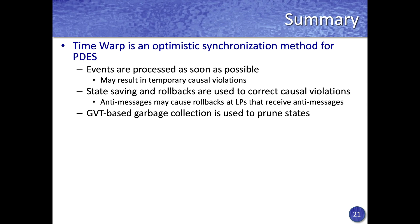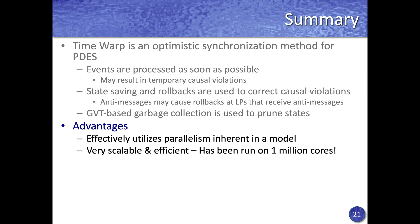In summary, time warp is an optimistic synchronization protocol where the idea is to process events as soon as possible, which may cause temporary causality violations. Causal violations are detected when a straggler message is received. Time warp uses state saving and rollback to recover. Anti-messages may cause cascading rollbacks at other logical processes, rippling through the simulation to restore causality. Time warp requires GVT-based garbage collection to prune unnecessary states and events. A key advantage is that it effectively extracts and utilizes parallelism inherent in a model.